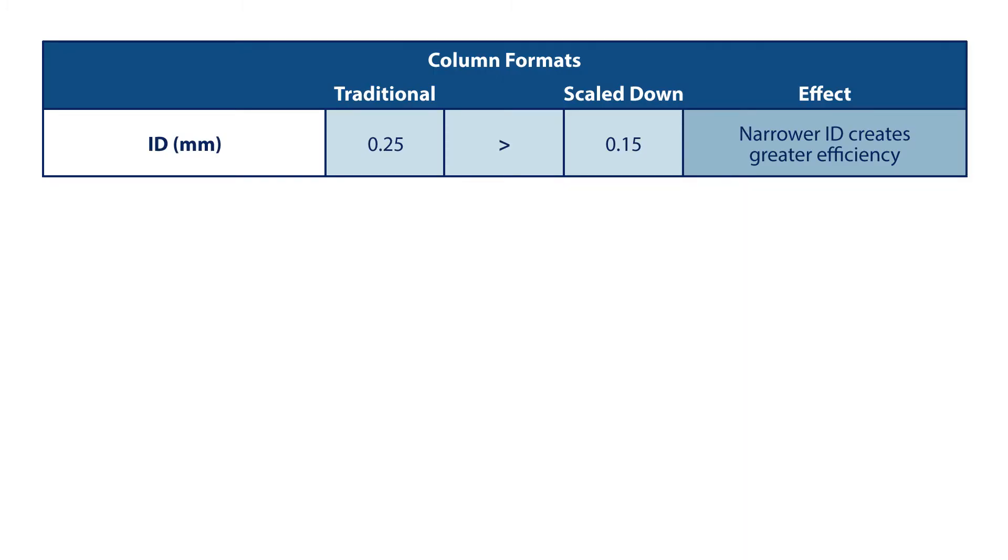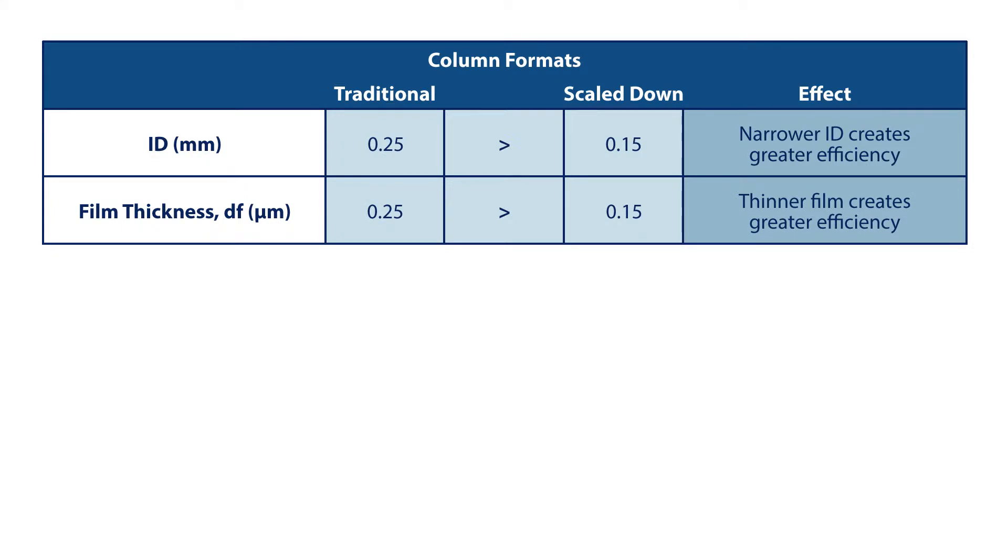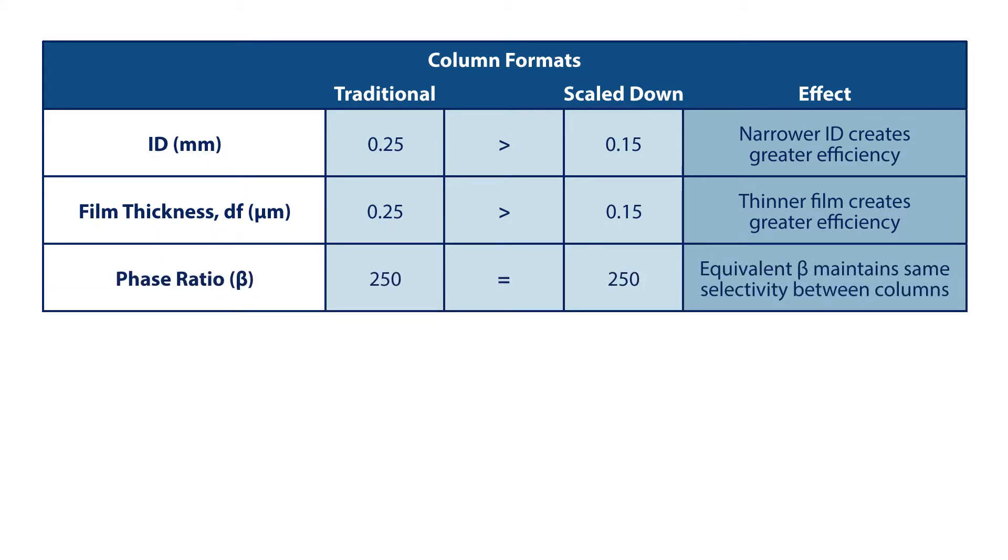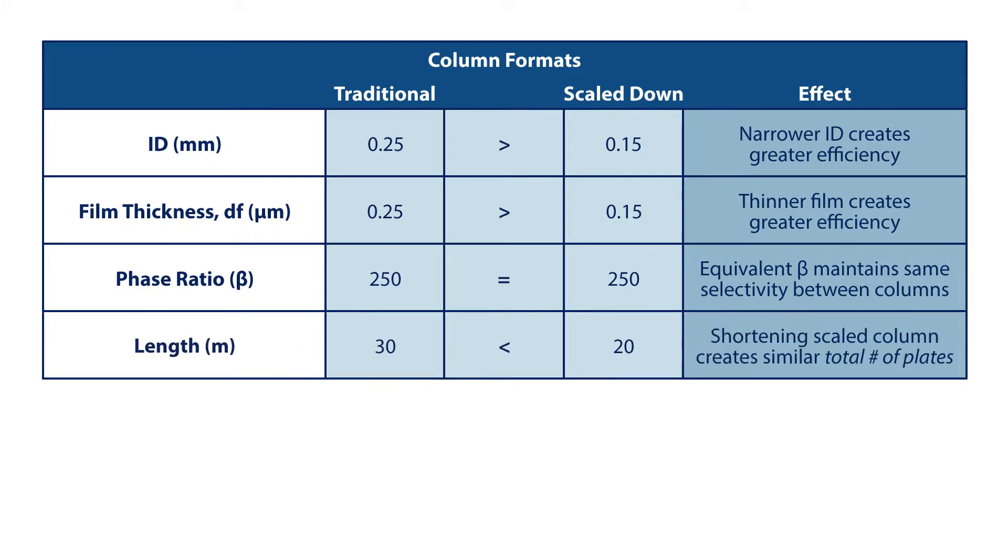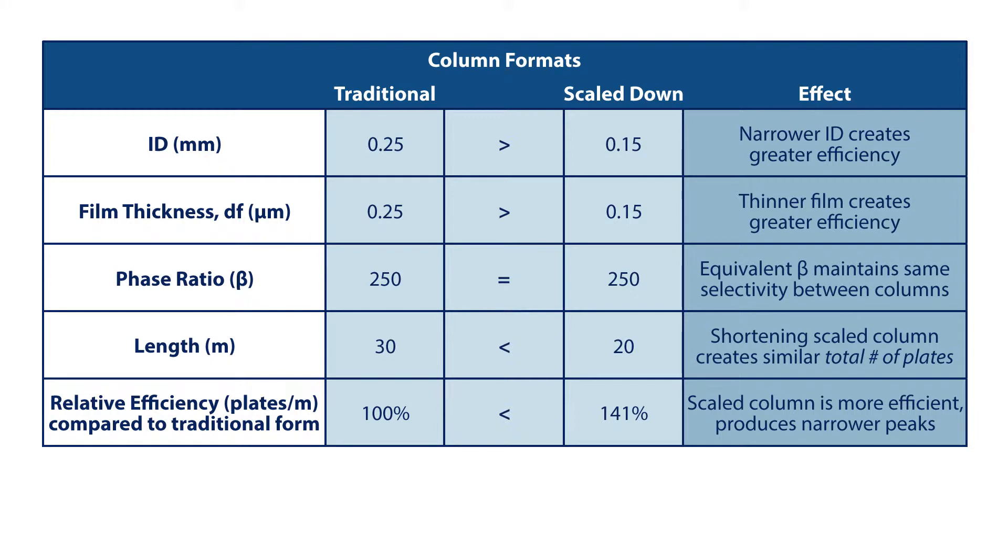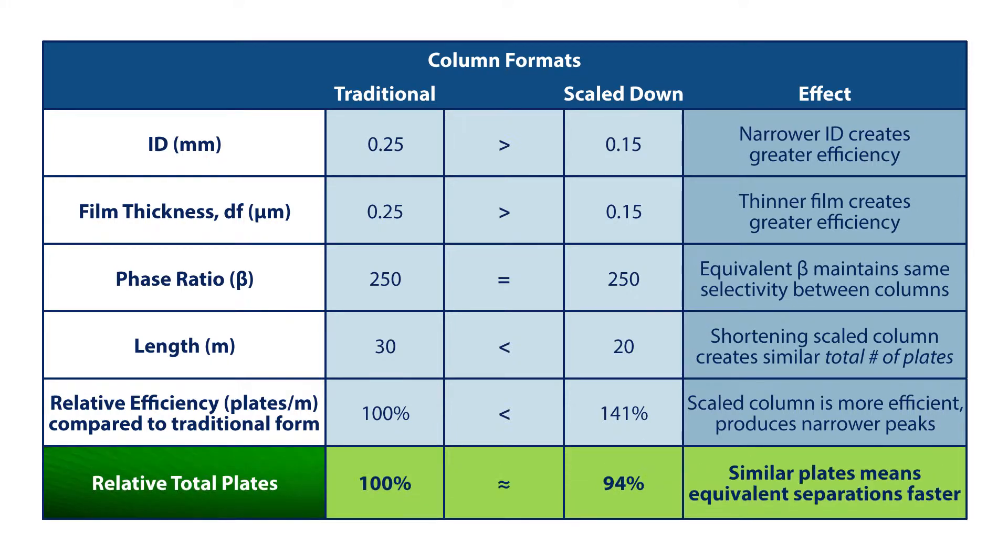When changing column dimensions, it is important to adjust inner diameter and film thickness proportionally so that we maintain the same phase ratio. The more efficient column should also be shorter than the original. This scaled-down, more efficient column will have more plates per meter. We want to keep the total number of plates the same, so you'll end up with a shorter final column length.